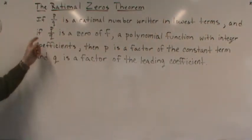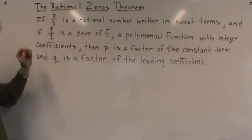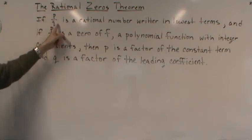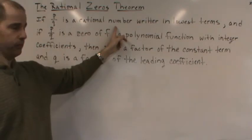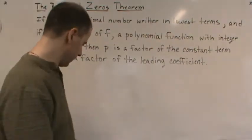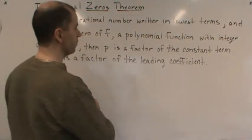So here's what it says. The Rational Zeros Theorem says that if we have P divided by Q, if P over Q is a rational number in lowest terms—so this is in lowest terms—